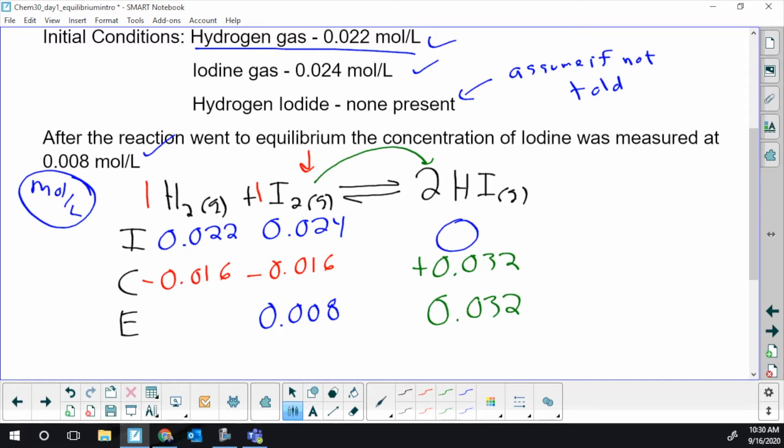I've almost completed the whole ICE table. I just need to go back and do that first column. The first step is to do a column, the second step was to do all my C's, and then my third step is to complete the missing columns, the E values at the end. 22 minus 16 is 6, 0.006. I now know all my E concentrations.